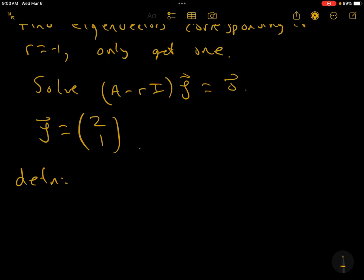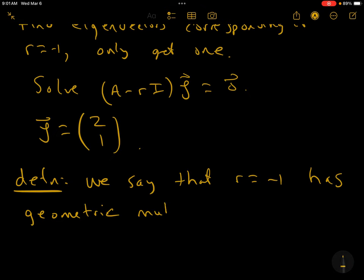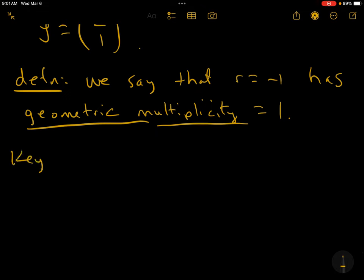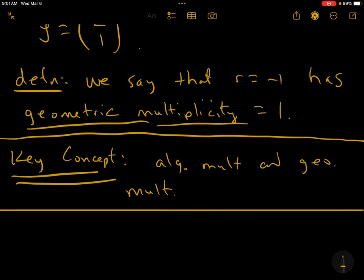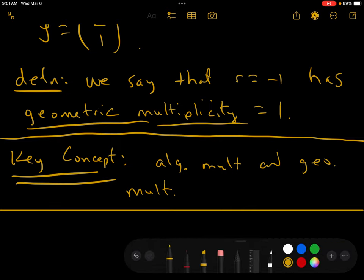Here's our second definition. With respect to this problem, we say that R equals minus 1 has geometric multiplicity equal to 1, because there's only one eigenvector that corresponds to the eigenvalue R equals minus 1, which has algebraic multiplicity equal to 2. This is a key concept we're going to explore at length soon, this relationship between algebraic multiplicity and geometric multiplicity. This is one of my favorite things in the world.